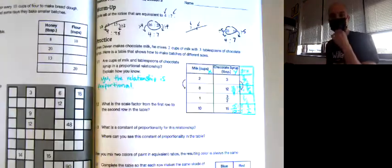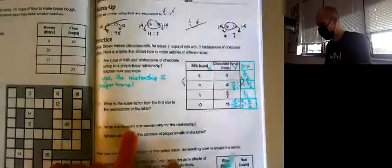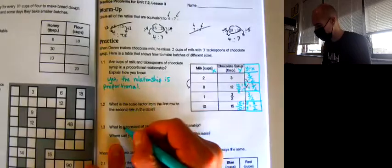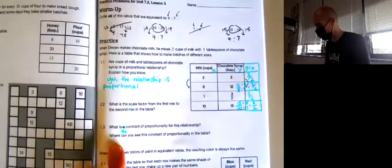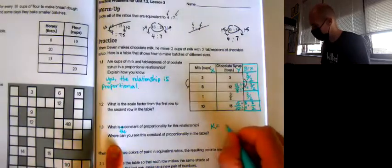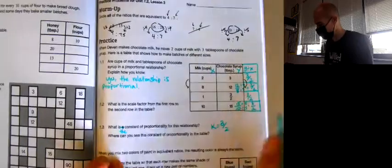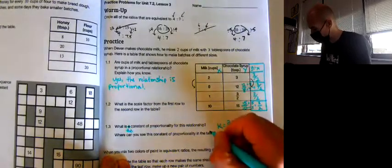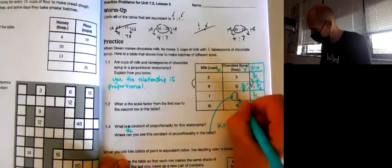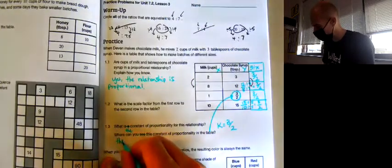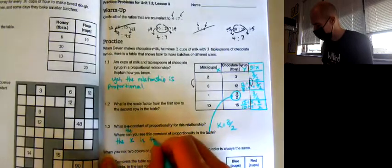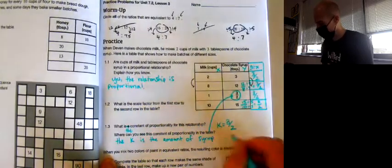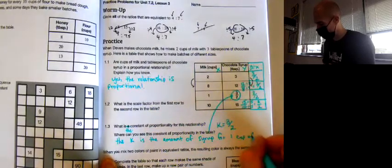Normally I would write what the K or the constant of proportionality is here, but I think they're going to ask for it down here anyway. It says what is a constant of proportionality for this relationship? That's weird that they said A. It should be the. There's only one constant of proportionality. And it's going to be K equals 3 over 2. Where can you see the constant of proportionality in this table? I'm going to draw an arrow to right here.